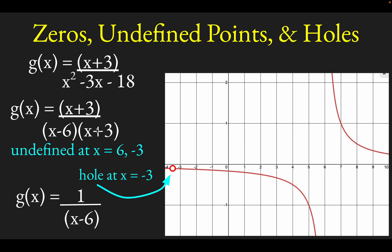So this function plotted in red is exactly the same as the curves you'd get if you plotted 1 over x minus 6, with the exception of this hole at x equals negative 3. That's because of these repeated factors — factors that appear in both the numerator and the denominator.